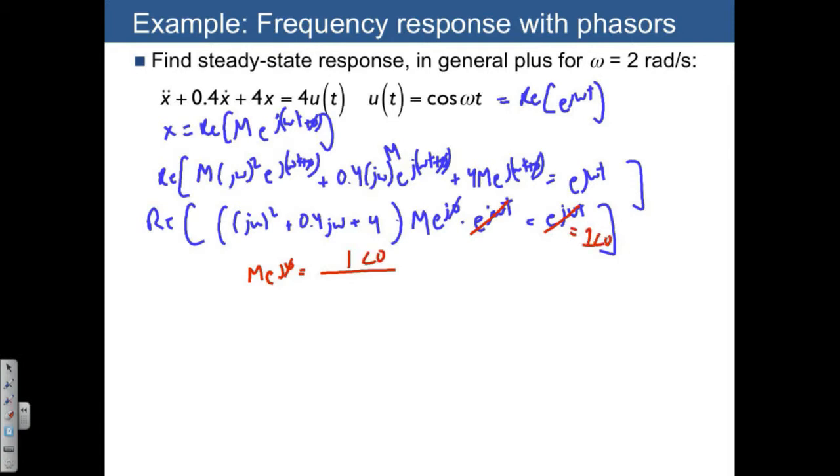Divided by the denominator, which is 4 minus omega squared, that's the real part, plus the imaginary part, 0.4 omega, where we need to convert the denominator also into magnitude and a phase. So that's where we get the square root of 4 minus omega squared squared plus 0.4 omega squared with an angle of arctangent 0.4 omega divided by 4 minus omega squared.